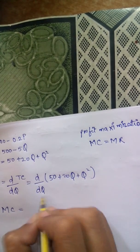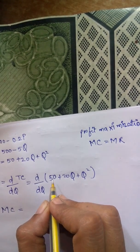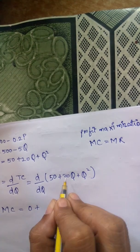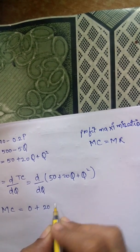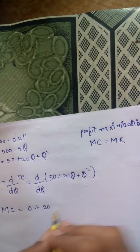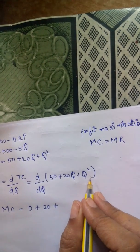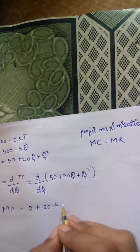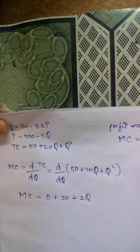MC will be: the differentiation of any constant value will be 0, differentiation of 20Q will be 20, and the differentiation of Q squared will be 2Q.